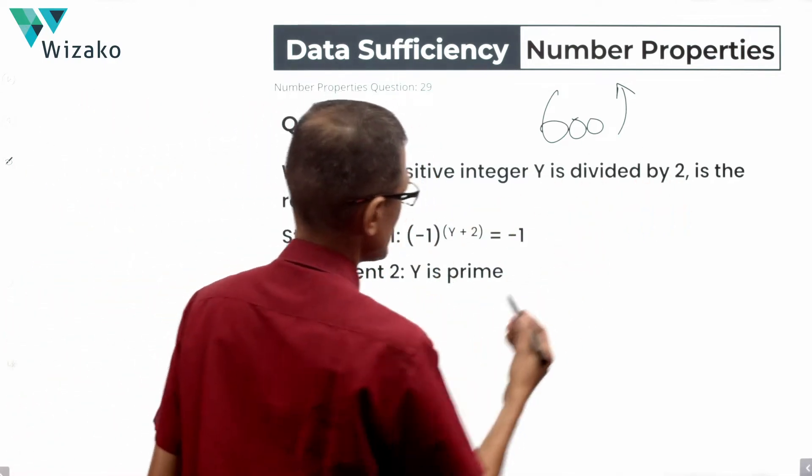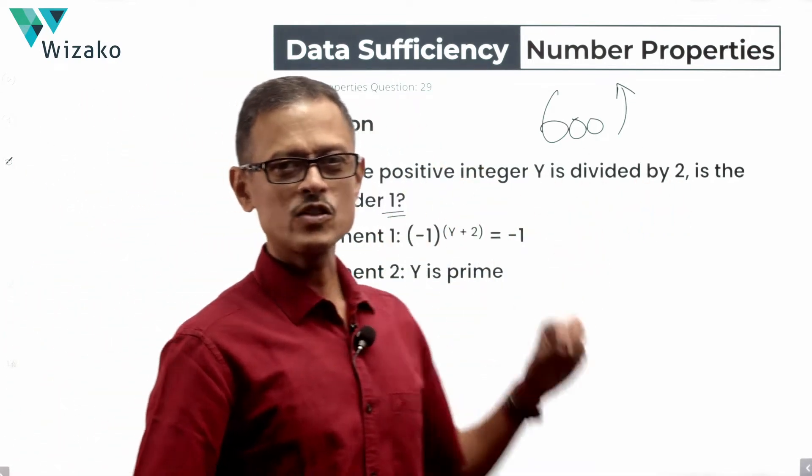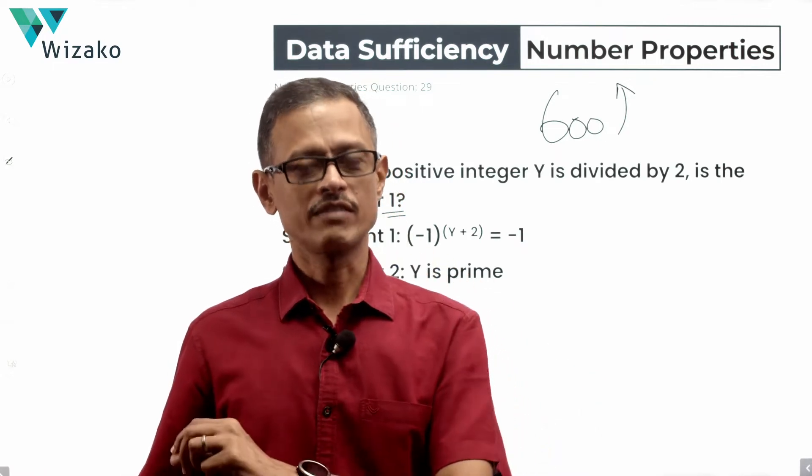When the positive integer Y is divided by 2, is the remainder 1? That's what the question is. We'll essentially spend half a minute on the question stem.